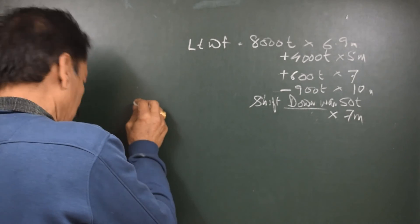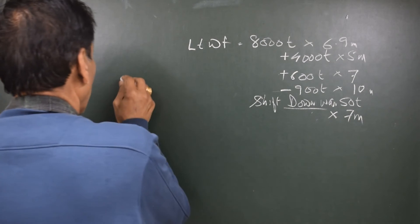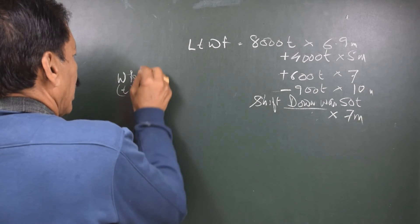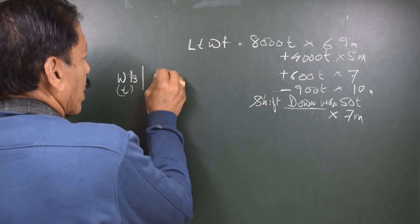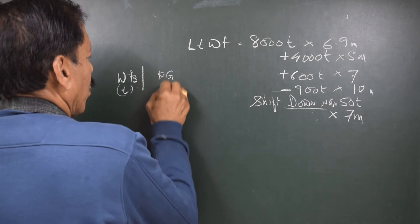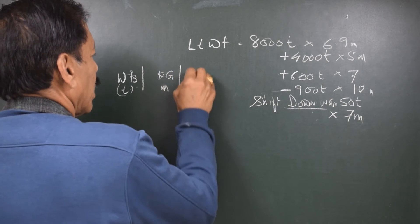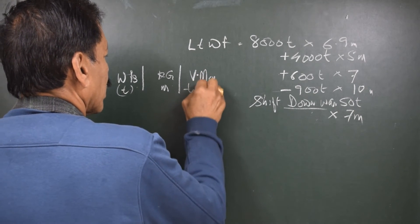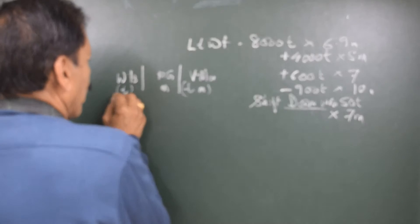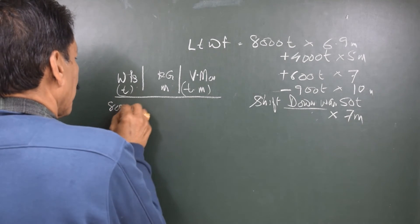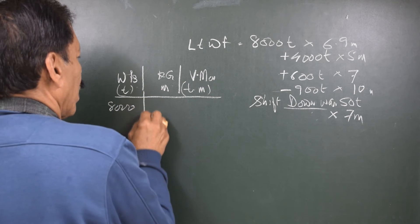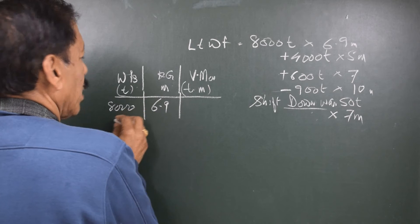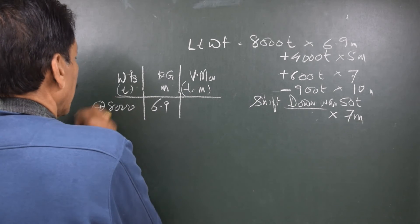In doing the calculations we make several columns. The first column is the weights in tons, then we have KG in meters, and then we have vertical moments in ton-meters. The light ship is 8,000 tons at a KG of 6.9 meters.